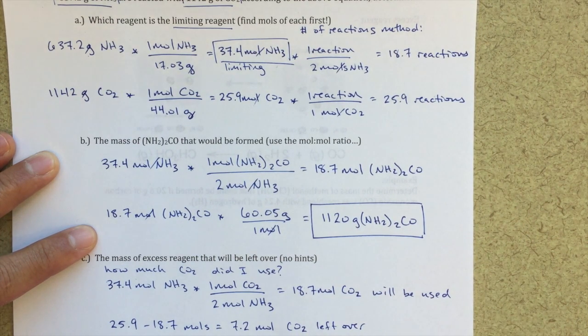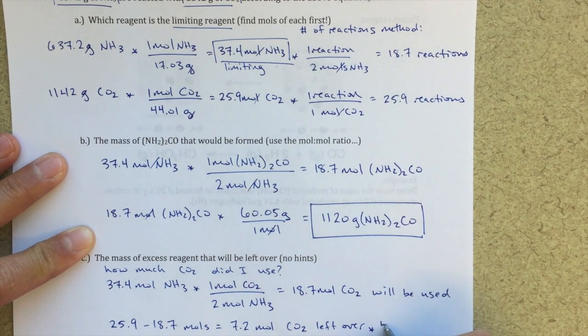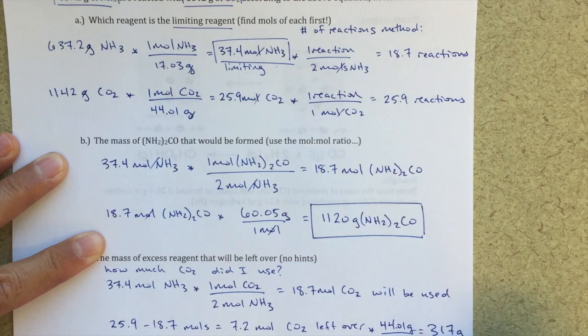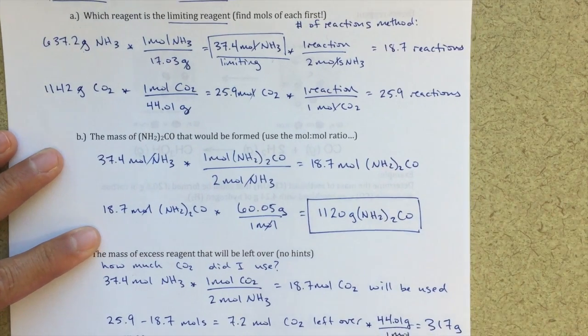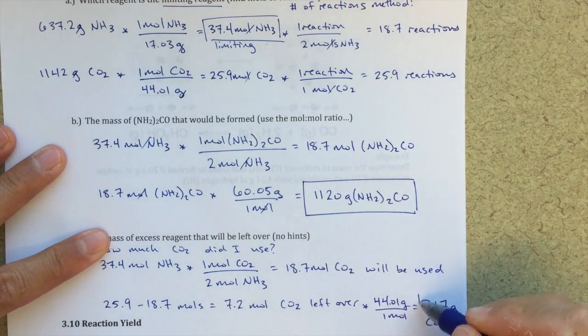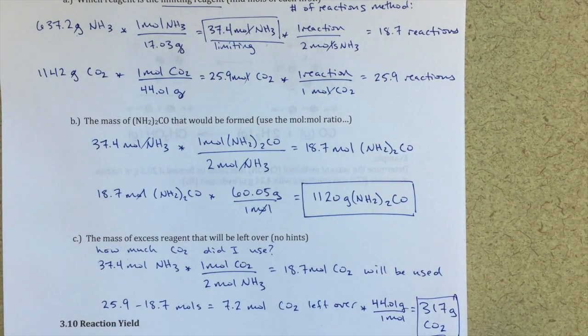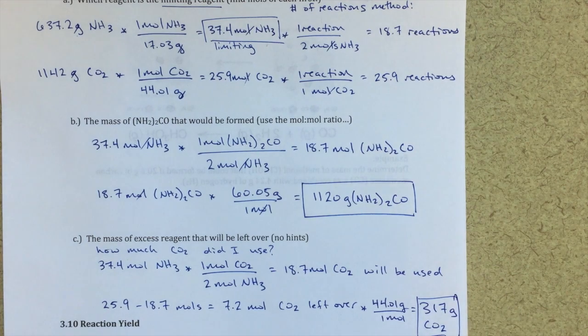Okay. The last thing, if I want to find the mass, I'm just going to convert 7.2 moles of CO2 into grams. 44.01 grams over one mole equals 317 grams of CO2 that will be left over. Again, there's a number of ways that we can do this problem. So other methods that you can use, but this would be a totally valid answer for this problem.